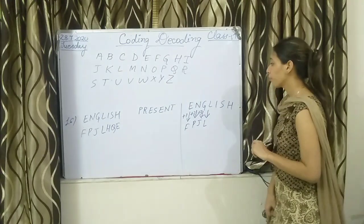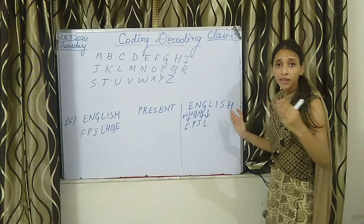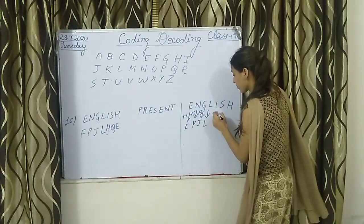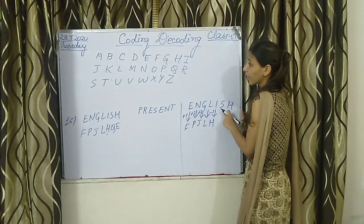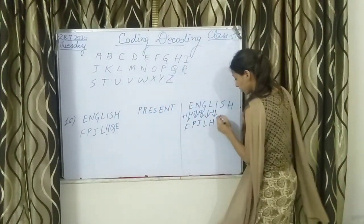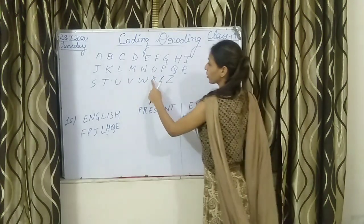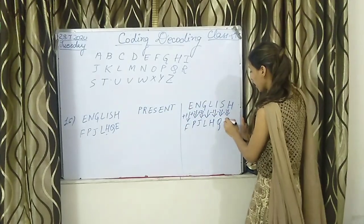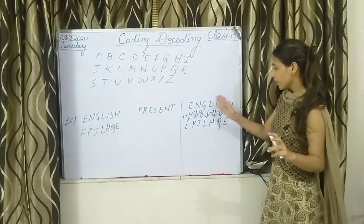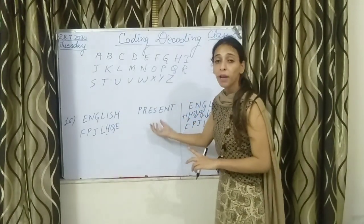So the pattern is: first plus one, plus two, plus three, then zero, then minus one — it starts decreasing by the same amounts we added. For H, minus three is applied. So the trick is: increase by +1, +2, +3, then zero, then decrease — the same trick will be applied to PRESENT.